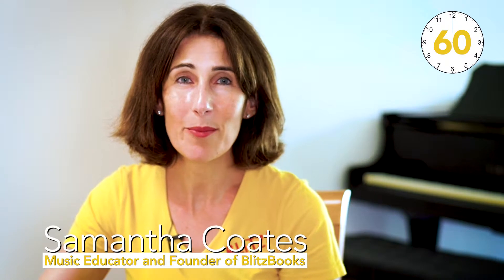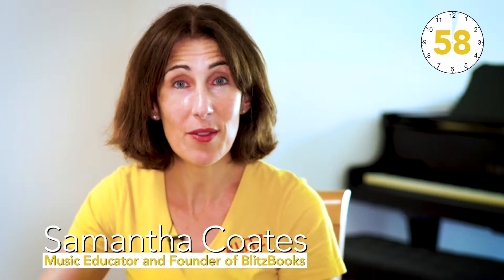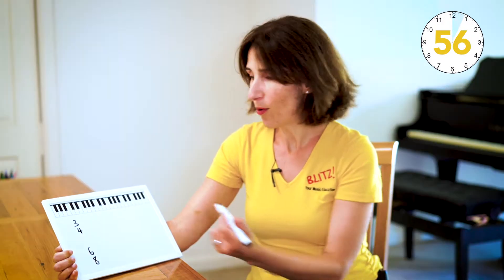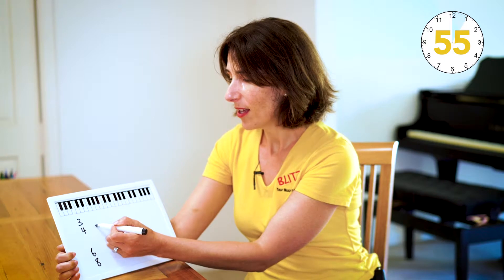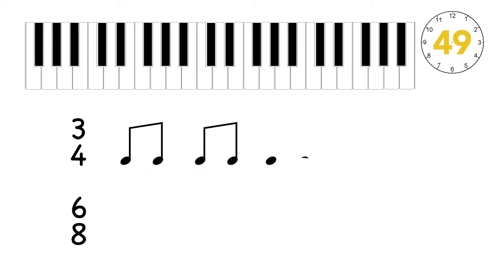Hi and welcome to 60 Second Blitz. We're going to talk about the differences between 3/4 and 6/8. With 3/4 we have three crotchets in a bar and each of those crotchets gets divided into a set of two quavers.